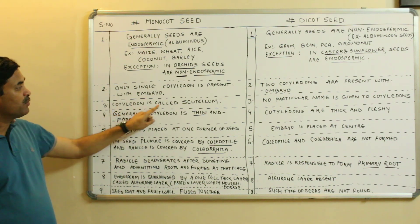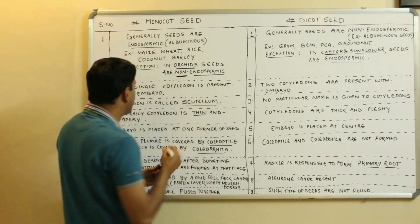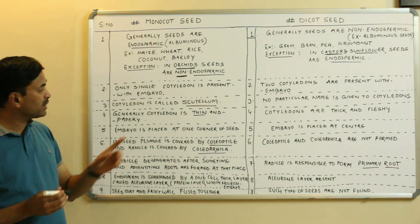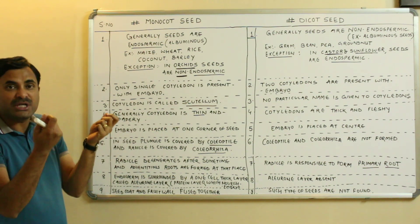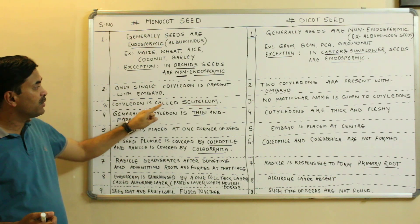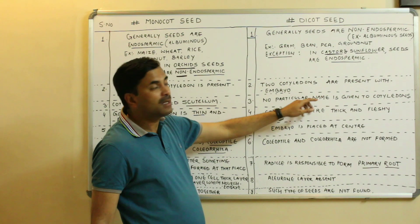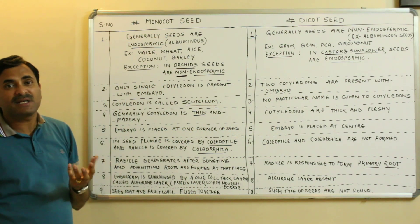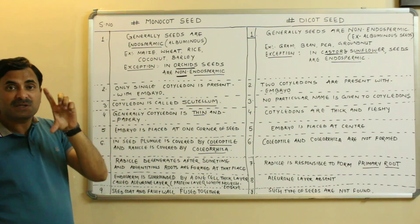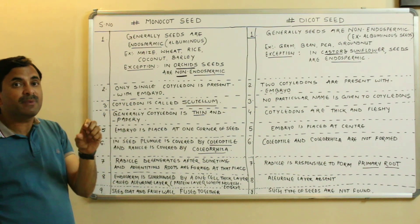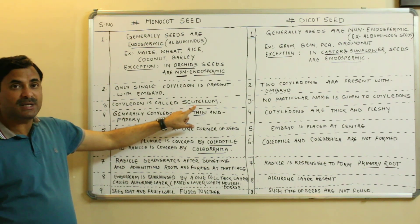Third point: in monocot seeds, the cotyledon is popularly called the scutellum. It is shield-like and shield-shaped. In dicot seeds, no particular name is given to the cotyledons, but in monocot seeds the single shield-shaped cotyledon has this specific name — the scutellum.